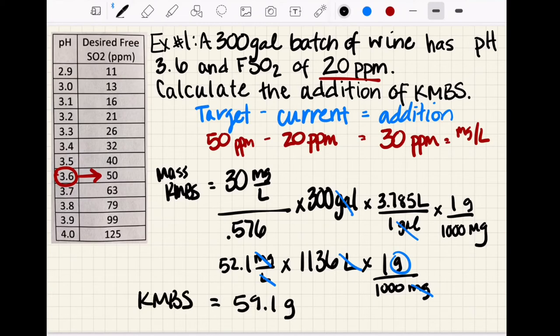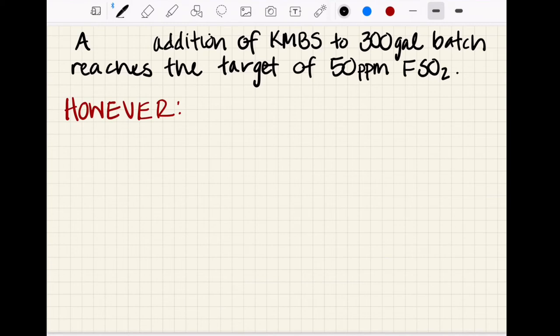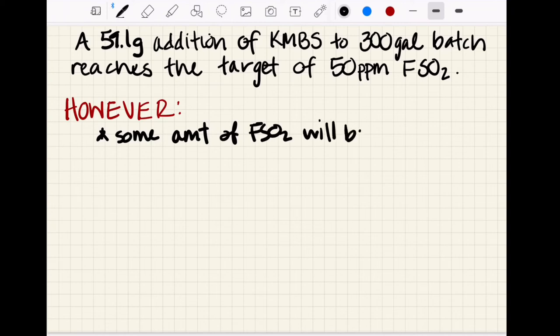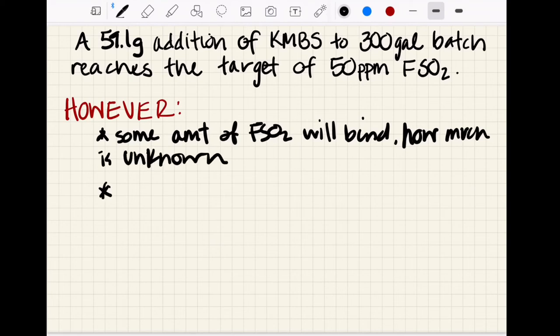If we have a 59.1 gram addition of KMBS to 300 gallon batch, we reach our target of 50 ppm of free SO2. However, there's a caveat: some amount of our free SO2 is going to bind. Remember we talked about free plus bound equals total. So some amount of free SO2 will bind. The problem is we don't know how much.